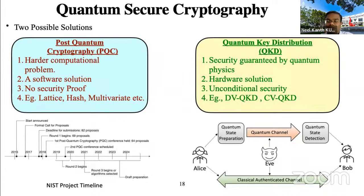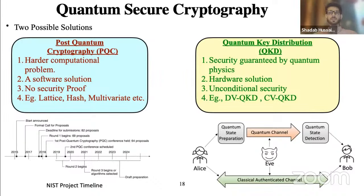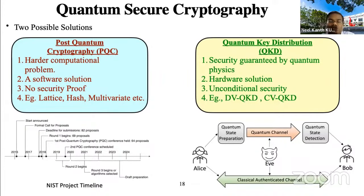[Q: Will hardware complexity increase for classical plus quantum security systems?] Yes, hardware complexity will increase. To include QKD, new hardware is needed because current classical detectors and transmitters cannot directly use quantum keys. This is a challenge that needs to be overcome in hardware technology over the next decade.